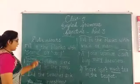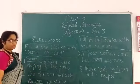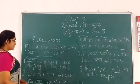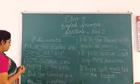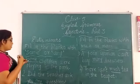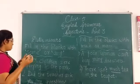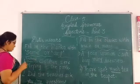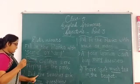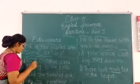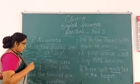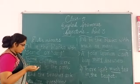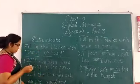'Some children were playing in the park.' Here 'children' is a countable noun so we use 'some'. Next: 'Did the teacher ask you any question?' — this is an interrogative sentence, so we use 'any'.